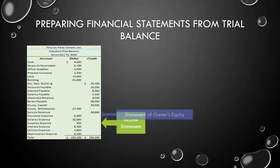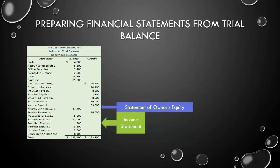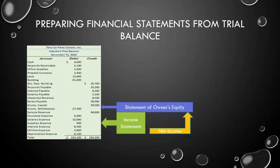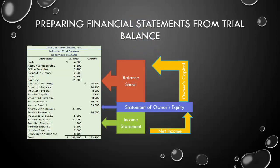The second statement we are going to make is the statement of owner's equity. That is going to use our capital and withdrawal accounts as well as the net income we determined on our income statement. After we complete our statement of owner's equity, we are going to prepare our balance sheet, which uses all of our asset and liability accounts plus the ending balance of owner's capital.